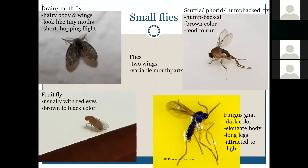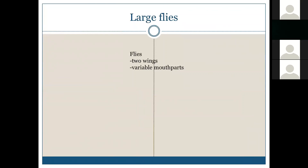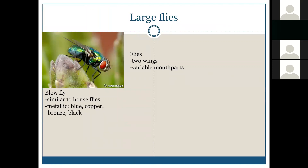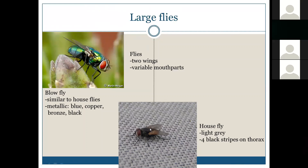For large flies — again two wings, and the ones discussed today have sponging mouthparts. Blowflies tend to be similar in size and shape to house flies but are usually a metallic color — bluish-green, copper, bronze, or shiny black. The house fly is light gray with four black stripes on the thorax. The flesh fly looks similar to a house fly — gray with black stripes — but has a red tip on the abdomen and tends to be hairier with thicker, bristly hair.